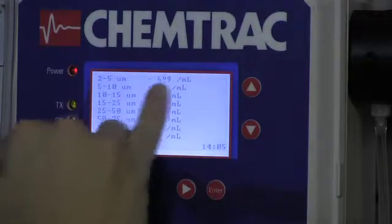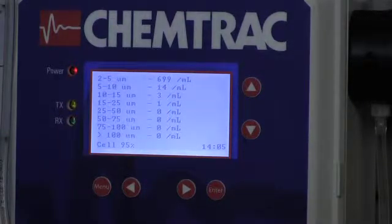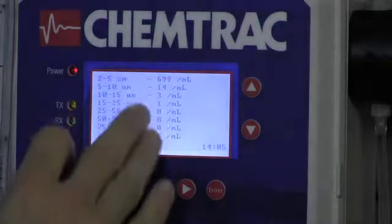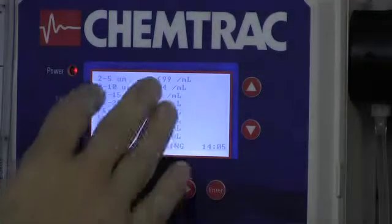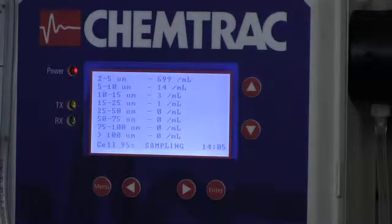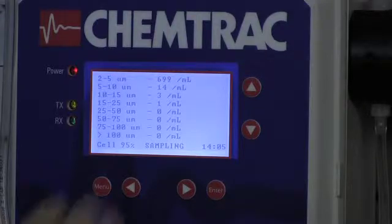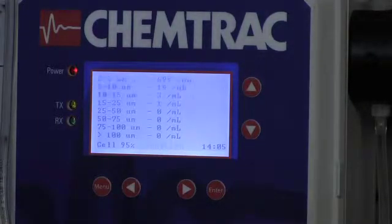So what we ideally would see here is 1,000 counts per milliliter, and what we have of course right now is 700 counts. We knew our background counts were around 50, so we really have about 640, 650 counts per milliliter that are showing up right now. So we're a little bit low on our count accuracy.